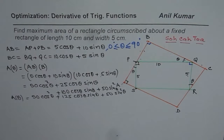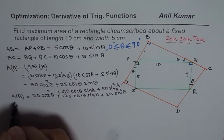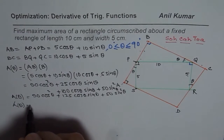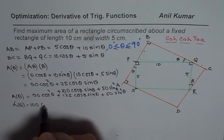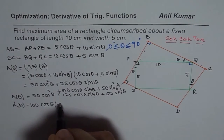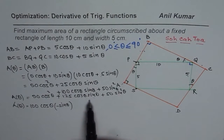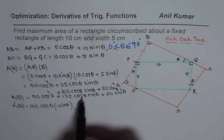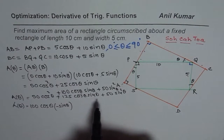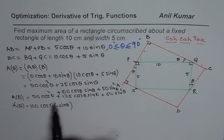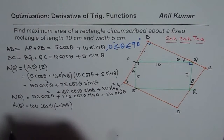Let us find the derivative of this function, A'(theta). The derivative of cos squared theta gives 100 cos theta times negative sin theta. Here we have the product cos theta sin theta, and we could write sin 2 theta. But actually, we could simplify the area expression first. Do you see 50 cos squared theta and 50 sin squared theta? Cos squared theta plus sin squared theta equals 1.